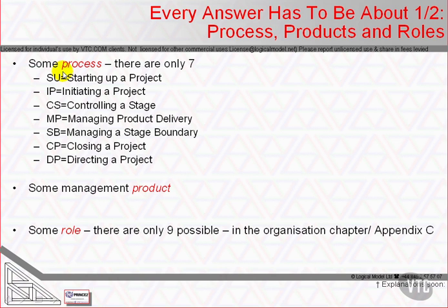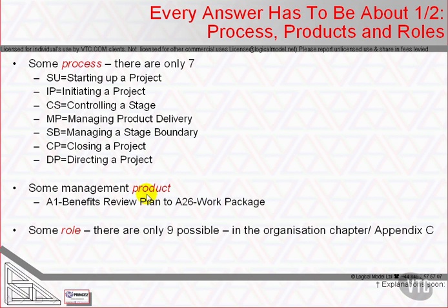And there's the decision making that happens between all the other chunks above the level of the project manager, which is the directing a project process. These seven processes work by creating and exchanging up to 26 project management products, as well as whatever specialist and technical products the project is creating for the user community. There are 26 management products which cover progress reports, exception reports, configuration item records, and a number of other record keeping needs.